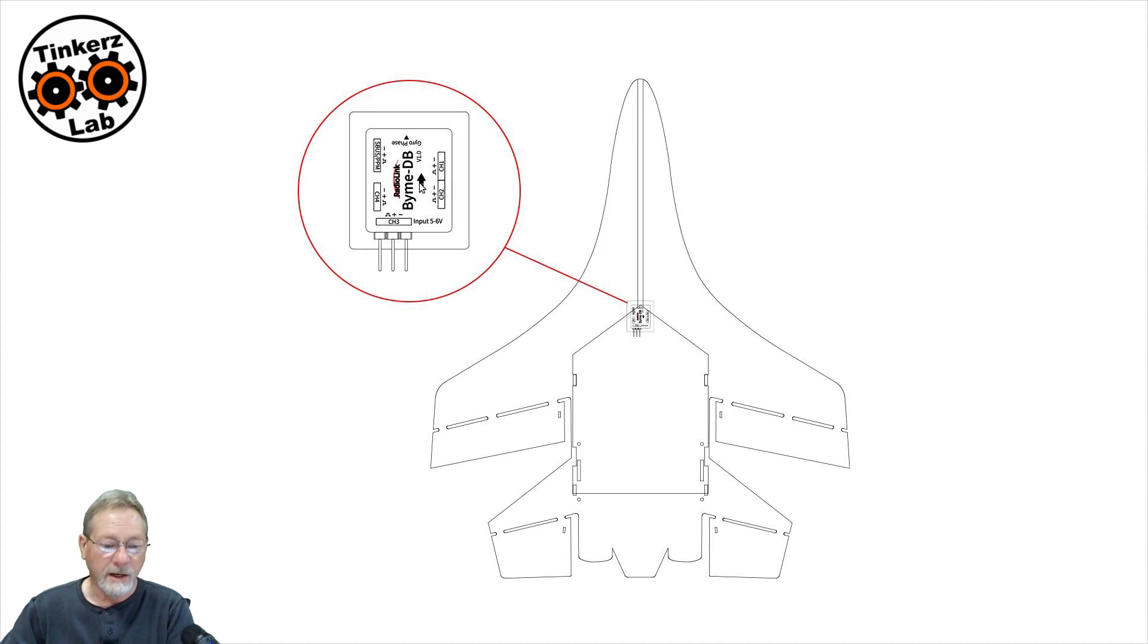I think that the gyro is more efficient when it's placed in that spot. It also has an arrow on it that shows you which direction, how it needs to be oriented for facing the nose of the aircraft. So be aware of that.